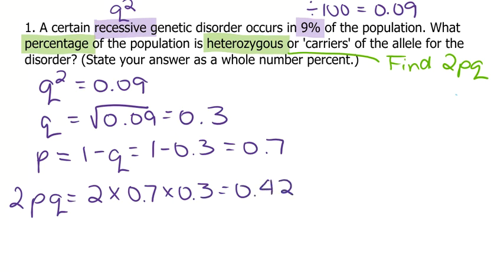Let's check the question and make sure we've answered everything. We want to know what percentage of the population is heterozygous, and we want to state it as a whole number. So to convert our decimal to a percent, we're going to multiply by 100 to get 42%. And that is our final answer.